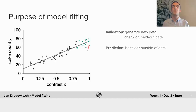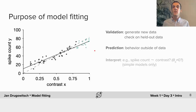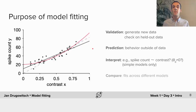Furthermore we can interpret the model parameters, for example by asking if the intercept is significantly different from zero — in other words, if a model with a zero intercept, shown here by a gray dashed line, would work equally well. Last but not least we can compare different model fits, for example asking if the relationship between contrast and spike counts is better captured by a line or by a quadratic relationship shown here in purple. So as you can see, a lot can be done once we've fitted our models.